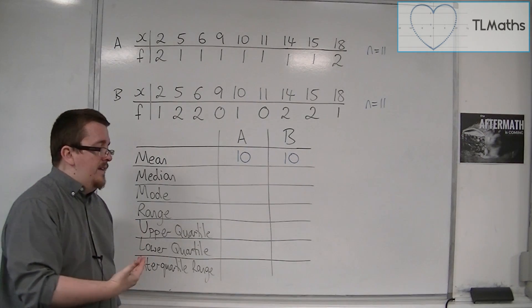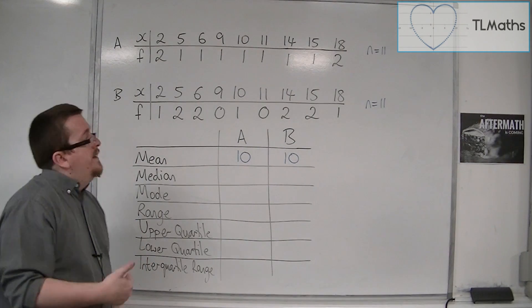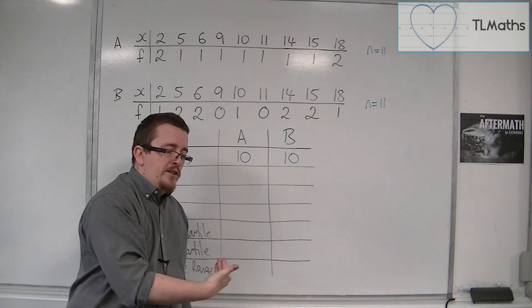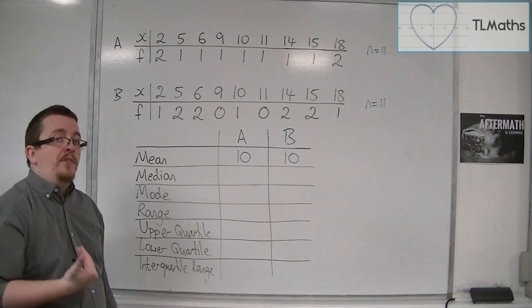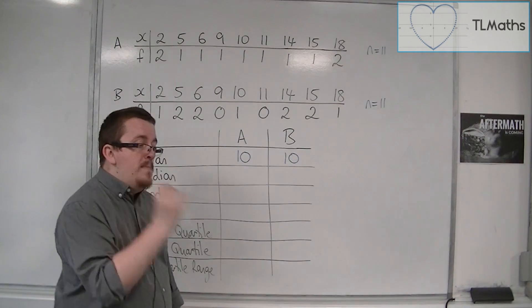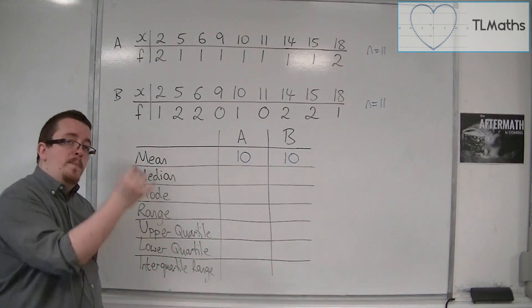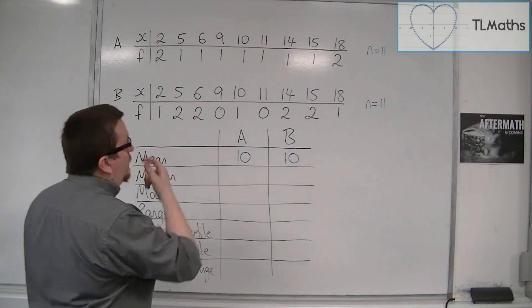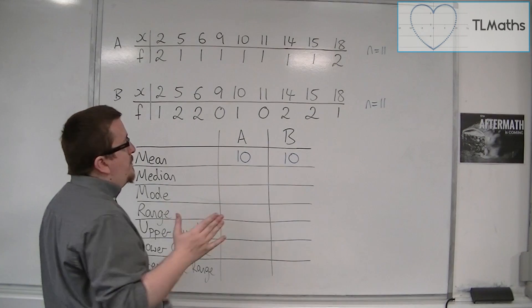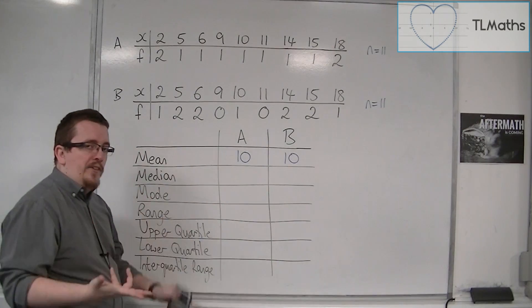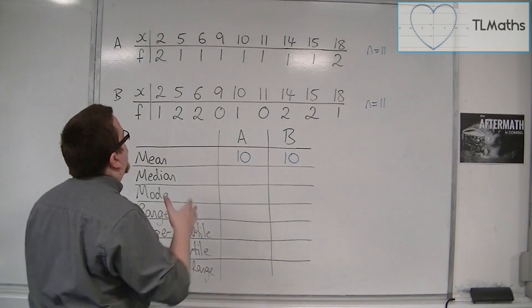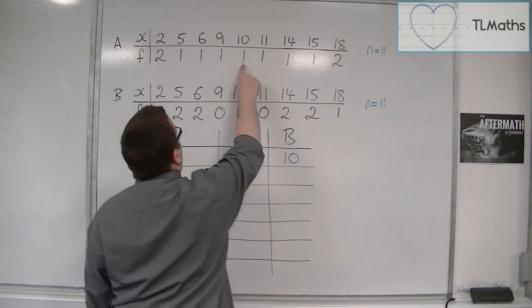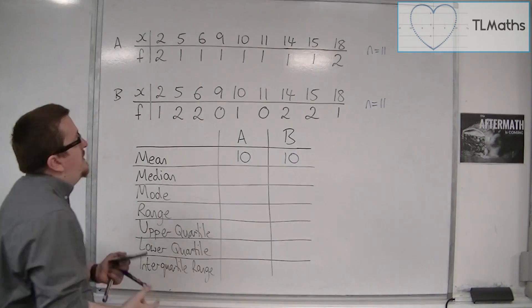Now, the median is the middle value. Since there's 11 bits of data, if we add 1 to that, that gets us 12, and then half it, that gets us 6. So the middle value will be 6 bits of data along. So we're looking for the 6th one. You can do this either by crossing them off as you go, like in a stem and leaf diagram. But 6 ones along, so we've got 2 there, 3, 4, 5, 6. So that means the median is 10.